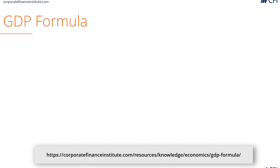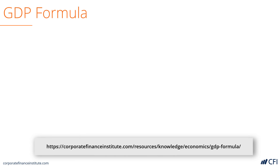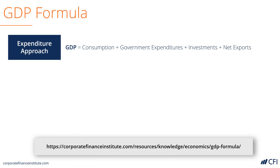Let's look at how it's calculated. Here's the GDP formula three different ways. The first approach is called the expenditure approach, and this is the most common, where GDP is equal to all consumption — which is all goods and services that are purchased — plus all government spending, plus investments, plus net exports.